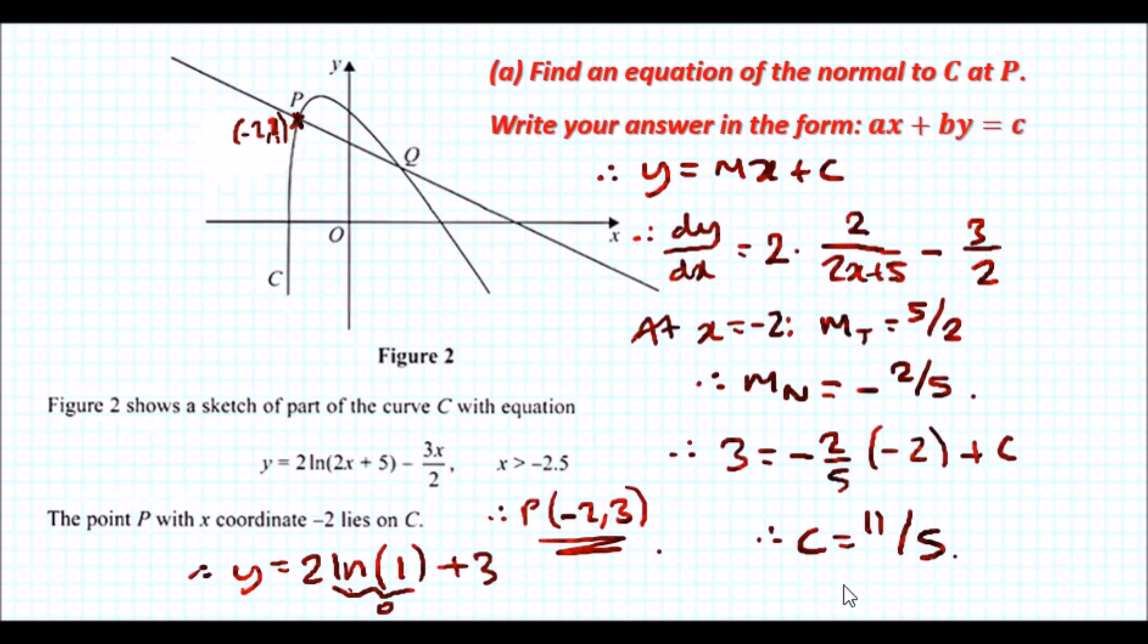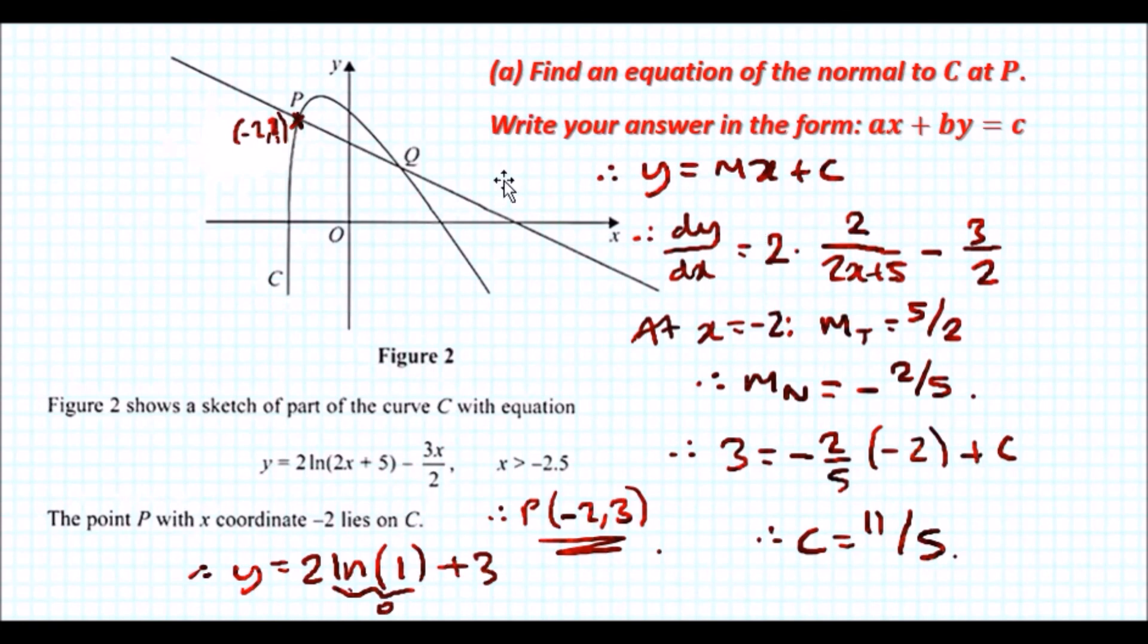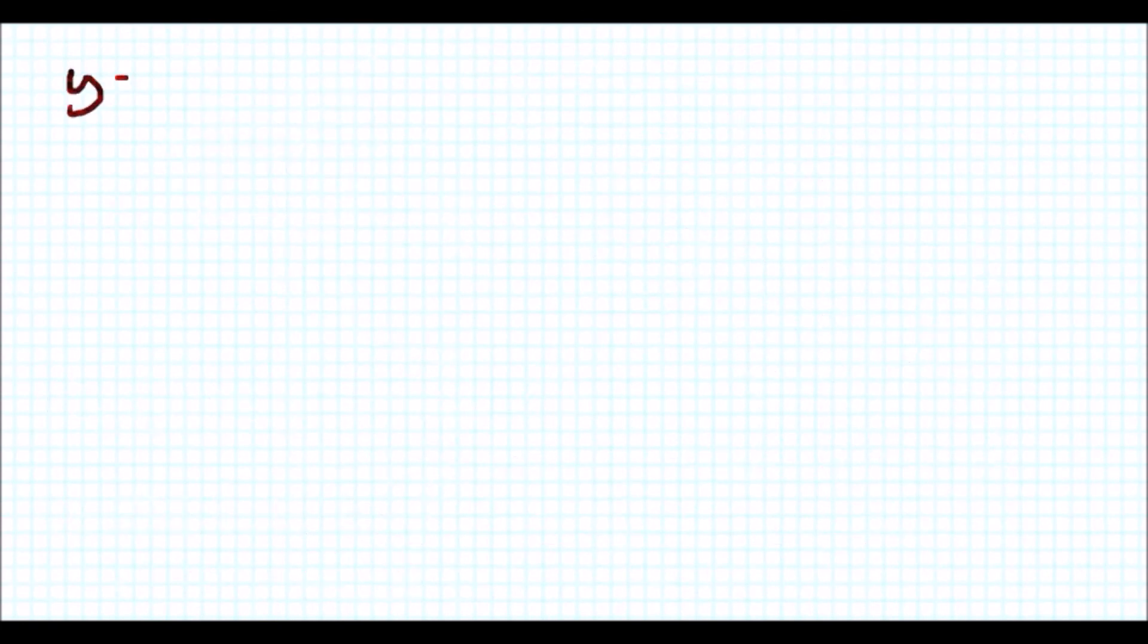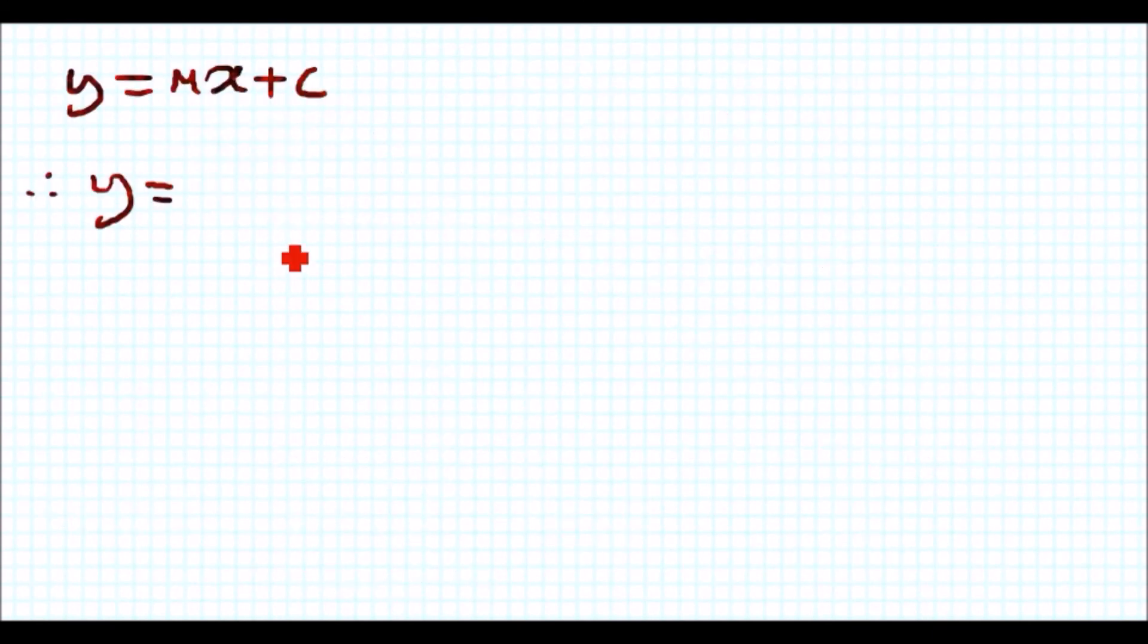Almost there. Now we plug values into the gradient equation. We have y = mx + c, so our final equation is y = -2/5 x + 11/5. Multiply the whole equation by 5 to eliminate fractions: 5y = -2x + 11. Finally, rearranging to ax + by = c form: 2x + 5y = 11.